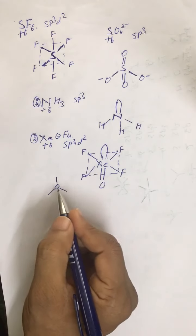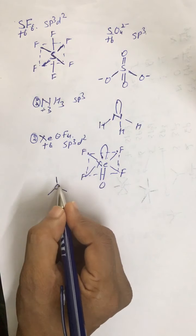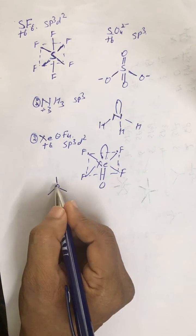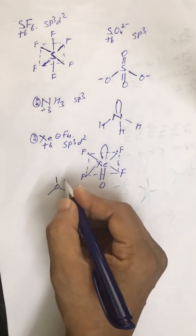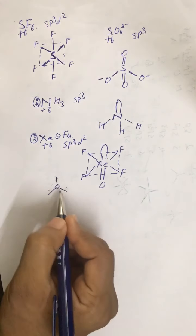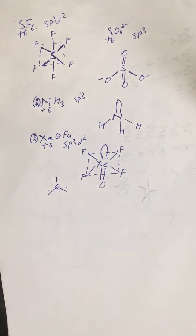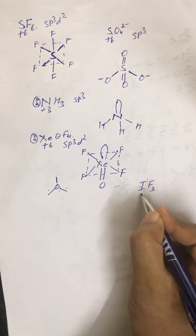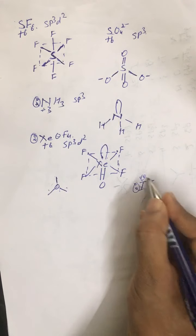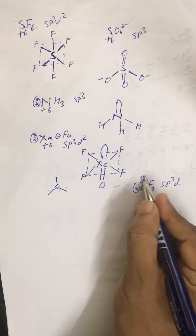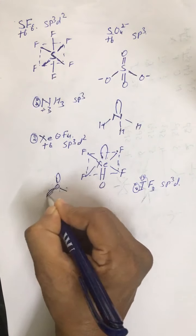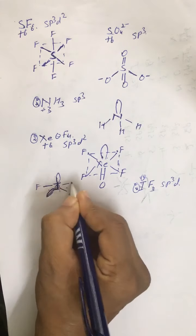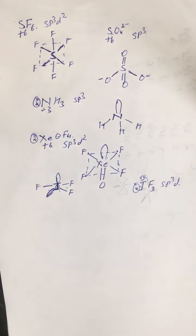In trigonal bipyramidal shapes, there are two sets of bond angles: 120° (equatorial) and 90° (axial). Lone pairs cause more repulsion and preferentially occupy the equatorial (120°) positions. For IF₃, with two lone pairs going to the equatorial positions and three fluorines arranged around iodine at the center, the resulting shape is T-shaped.